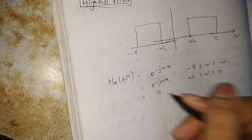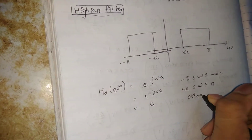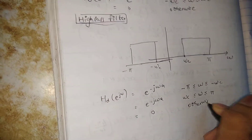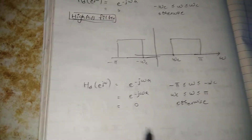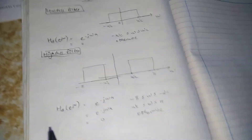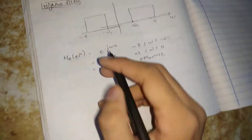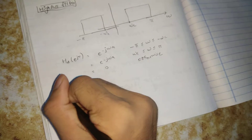Equal to zero otherwise. So this is your equation for the high pass filter.